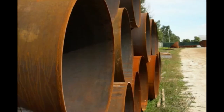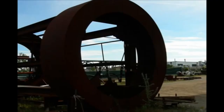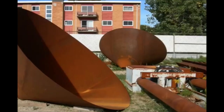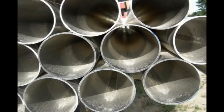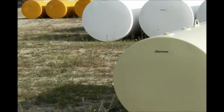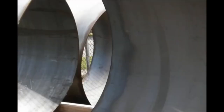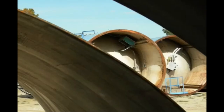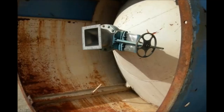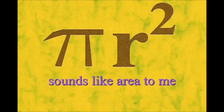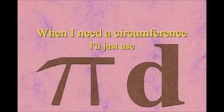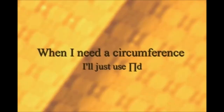Here is a circle, it knows how to get around. It has a radius from center to rim. And its diameter's a line that goes from side to side while passing through the center, now isn't that simple. Pi r squared sounds like area to me, when I need a circumference, I'll just use pi d.